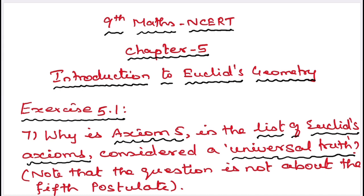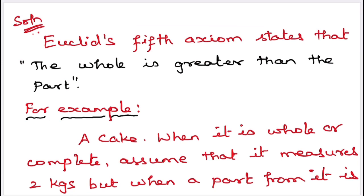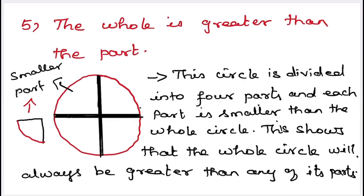The problem is: Why is axiom 5 in the list of Euclid's axioms considered a universal truth? First, the fifth axiom. The axiom is the whole is greater than the part.